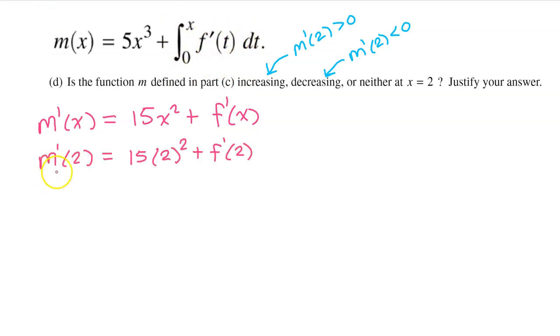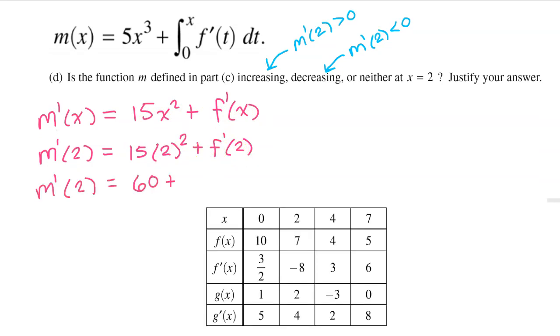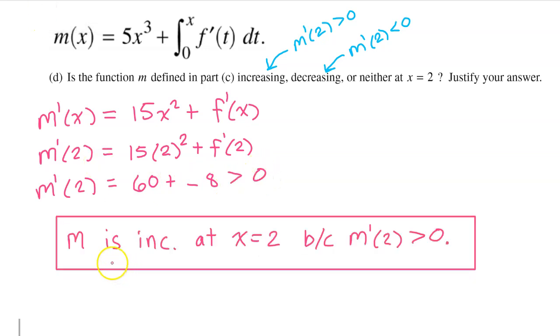To evaluate m prime at 2, we start by substituting 2 for both of these x's. So now we have this. 4 times 15 is 60, and f prime at 2 is negative 8. This sum is positive. So here's the summary and justification. m is increasing at x equals 2, because m prime at 2 is positive.